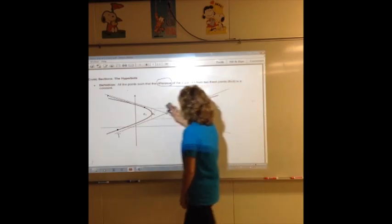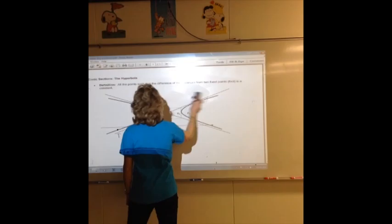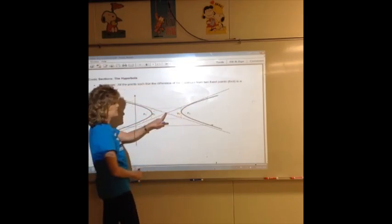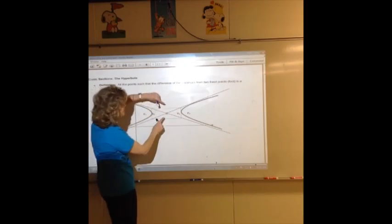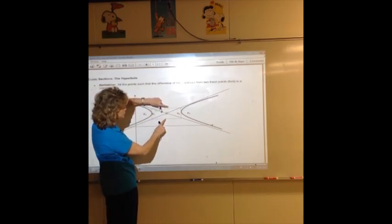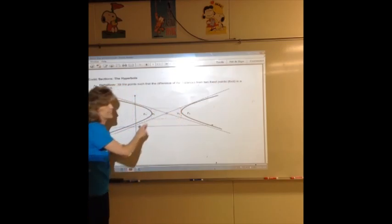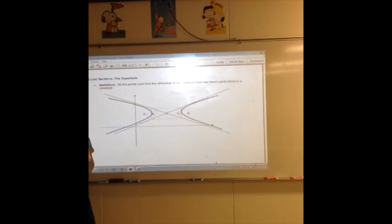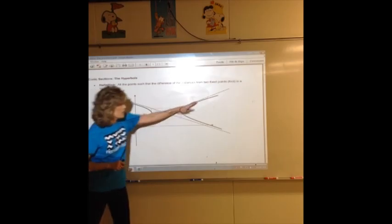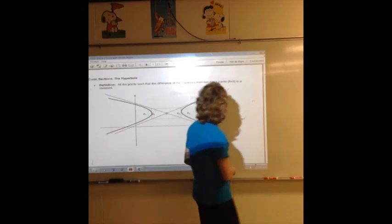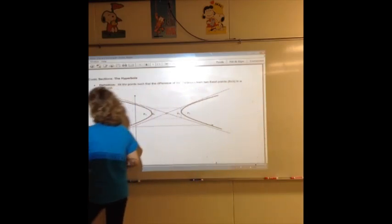So when you discuss a hyperbola, you will discuss asymptotes, vertices, center. You'll have B points, but this time the B points aren't going to show up on the branches. They're going to help you draw this little rectangle, and after you draw the rectangle, you can draw the asymptotes that go right through the diagonals. And so let's look at an example.